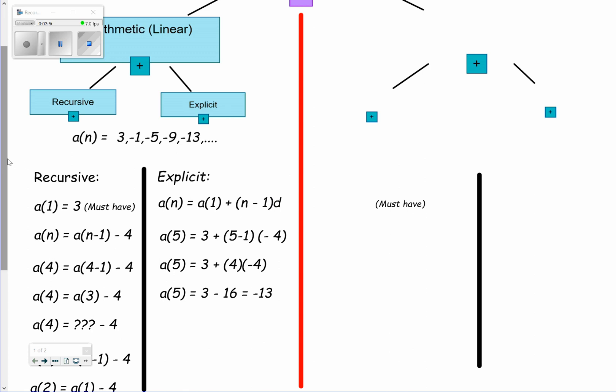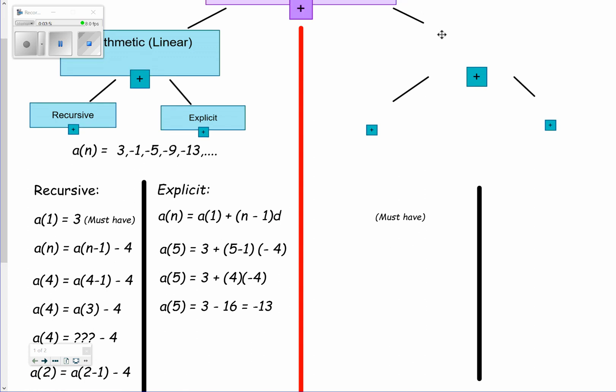The other one we touched on is what's known as geometric sequences. This will give you an exponential curve, something we'll talk about more in the future. But for our purposes for right now, just think of it as a nonlinear curve. Within geometric, there is also recursive and explicit.